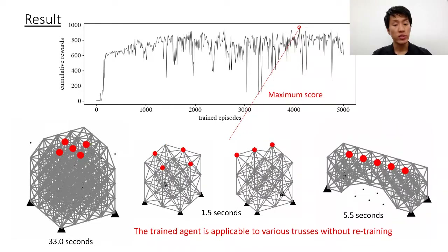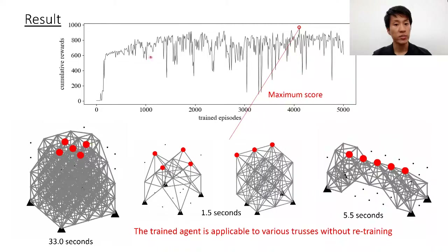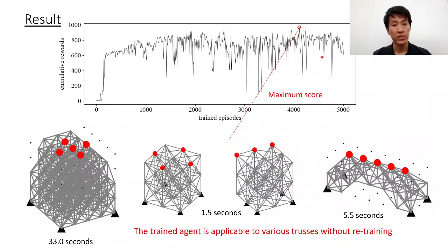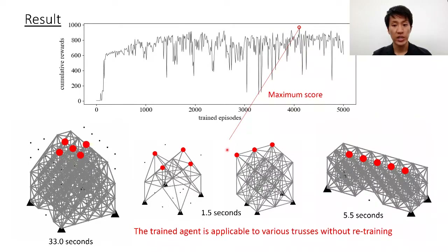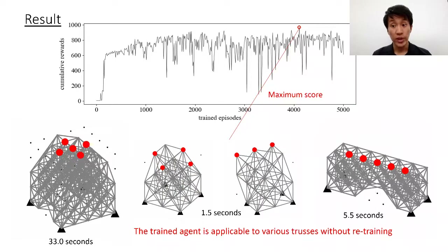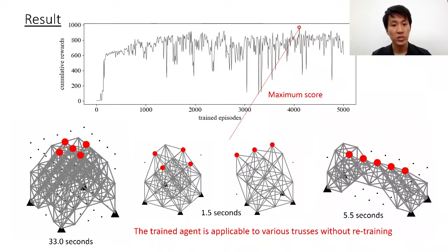The training results are shown above. The performance improved significantly in the early stages of training, and then the score history leveled off with some fluctuations. We extracted the best-scored agent at this point, and the removal sequences are visualized here. We only provided a reward to evaluate the design at each step, but the agent found reasonable removal sequences. It is one of the greatest advantages of our method that the trained agent can be applied to various frames without retraining.